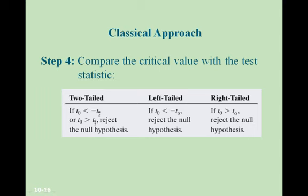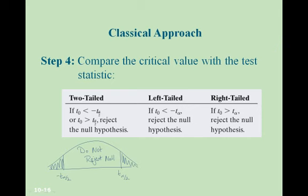Step four: compare the critical value with the test statistic. In a two-tailed test, the center region is where we do not reject the null. If our test statistic is less than the negative critical value or greater than the positive critical value, we reject the null; if it's between them, we do not. In the left-tailed test, alpha is not divided since there is only one tail.